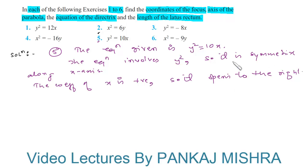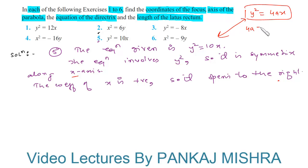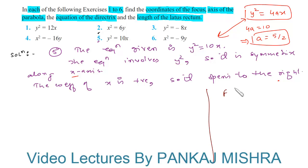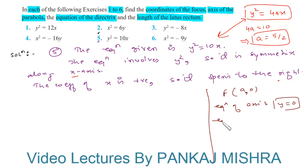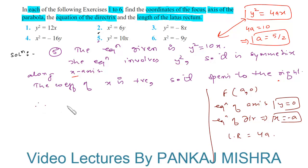The general form of a parabola which is symmetric along the x-axis and opens to the right is y² = 4ax. On comparing, 4a = 10, so a = 5/2. For such a parabola, the focus is at (a, 0), the equation of the axis is y = 0, and the equation of the directrix is x = −a.